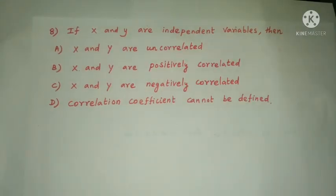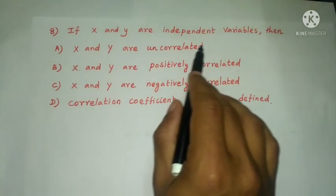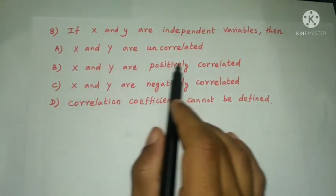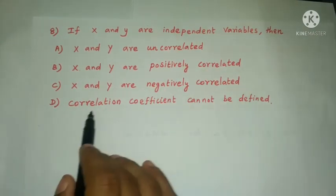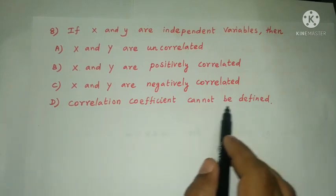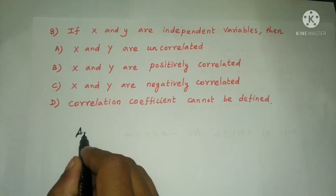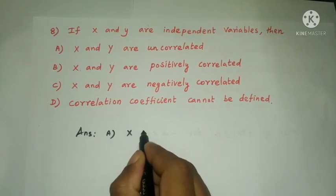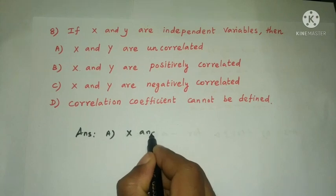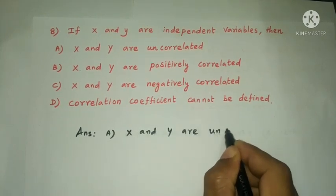Next question: If X and Y are independent variables, then — (A) X and Y are uncorrelated, (B) positively correlated, (C) negatively correlated, (D) correlation coefficient cannot be defined. The answer is Option A: X and Y are uncorrelated.